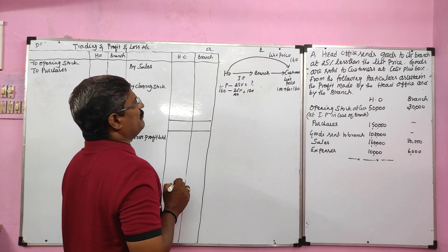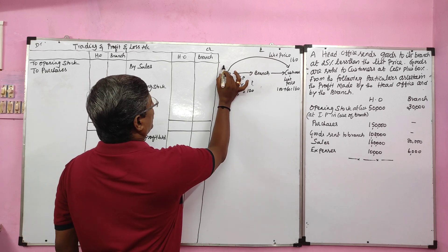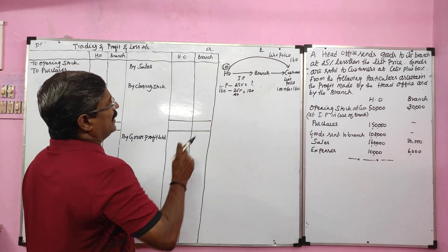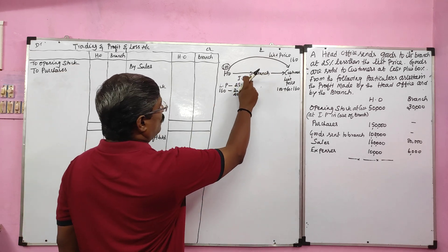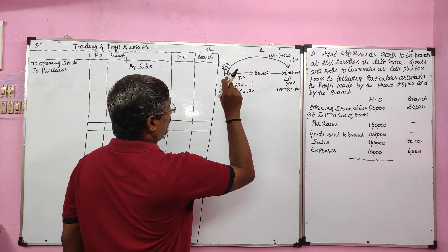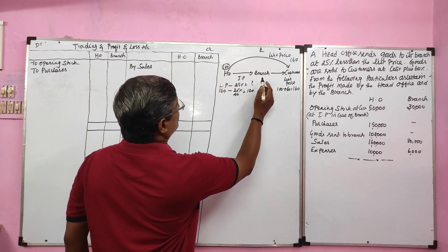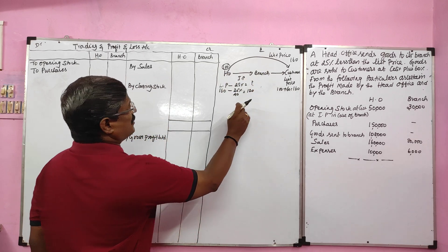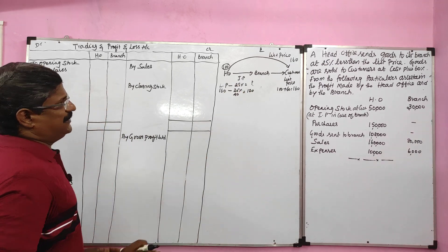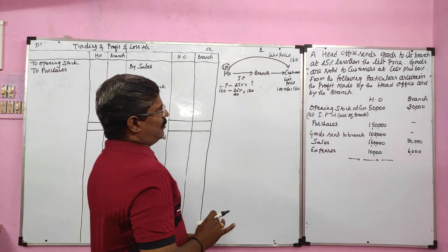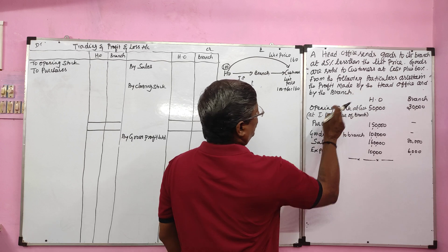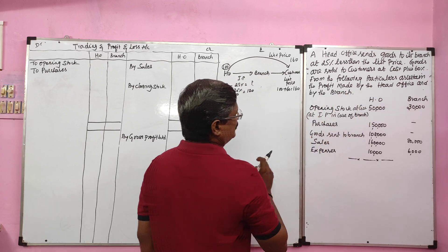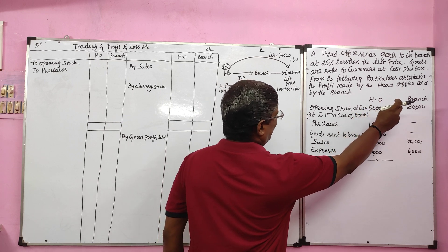One thing you should remember: the head office cost price is 100. The branch cost price we should also consider at 120. Now we will continue the problem — from the following particulars, ascertain the profit made by the head office and by the branch. Head office and branch information are given.